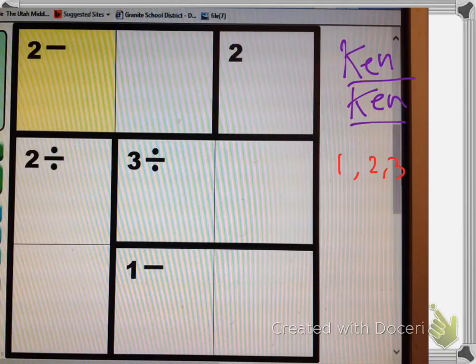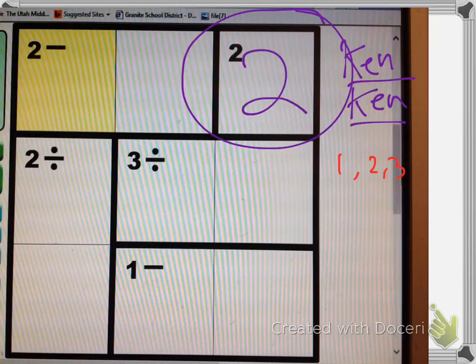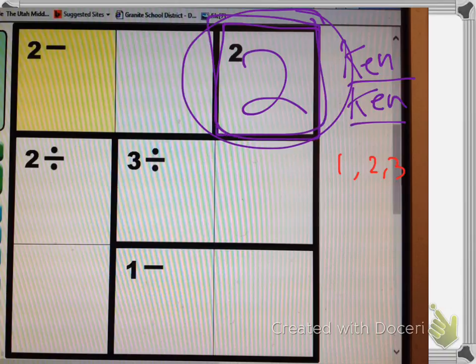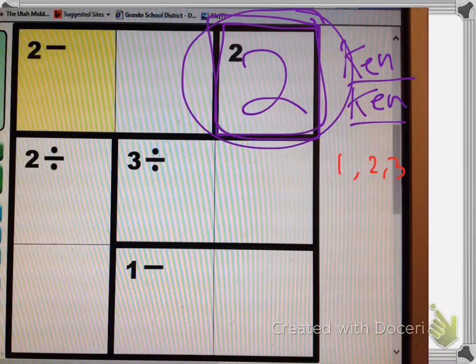So hey, here we go. So right away we know that this square is a 2 because it's bolded. See the thicker lines around it? And it says 2, so 2 has to go right here.